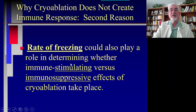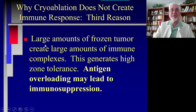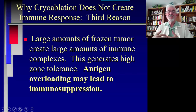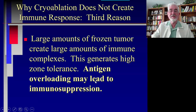That's a topic of chemoimmune therapy, to be discussed in future blogs. Another reason cryo cannot create immune therapy is that large amounts of frozen tumor create large amounts of immune complexes that overwhelm the system. This generates high zone tolerance — the Tregs jump in and try to control the immune response, creating an area of tolerance, and antigen overloading may lead to immunosuppression.